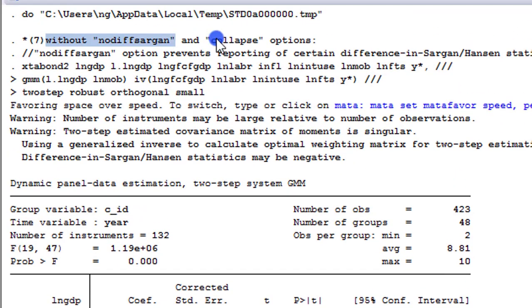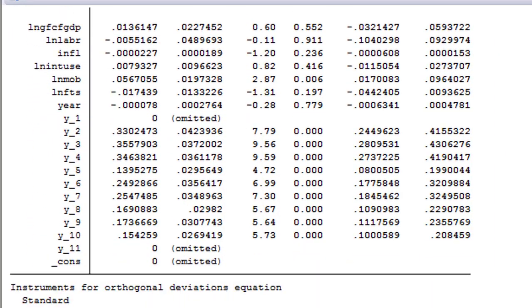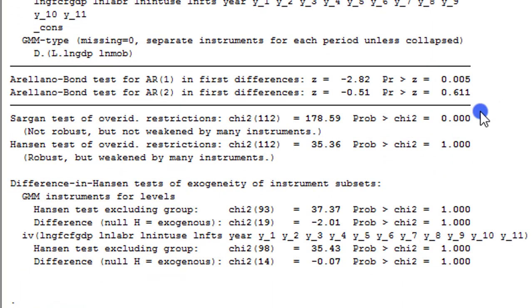Let's look at simulation 7 without the no-diff-sargan and collapse options. So by now, you have an idea of what your results will look like. Without collapse option, you have too many instruments. As you can see here at 1.32. So even without checking your Hansen, you should know that you cannot accept these results. Look at Hansen. 1.00. So let's just discard this and move on to the next one.